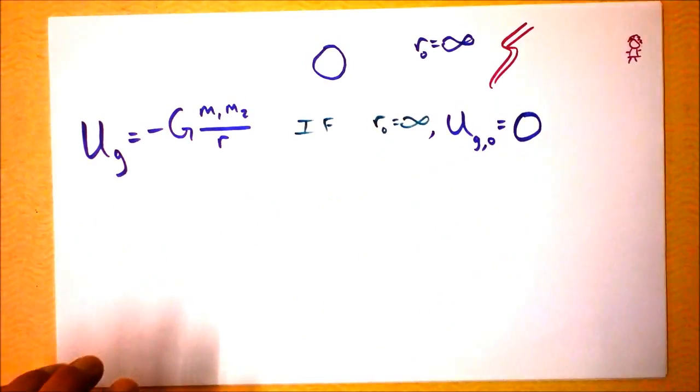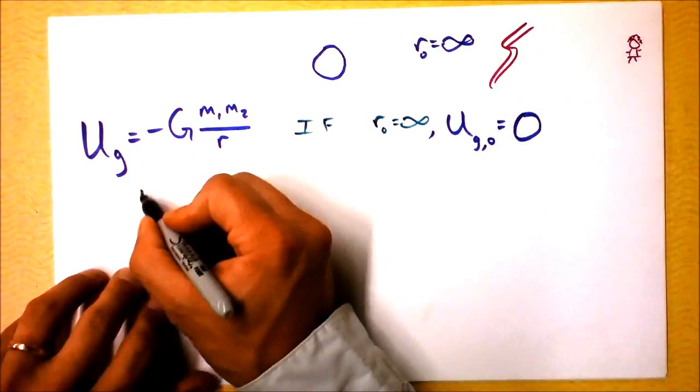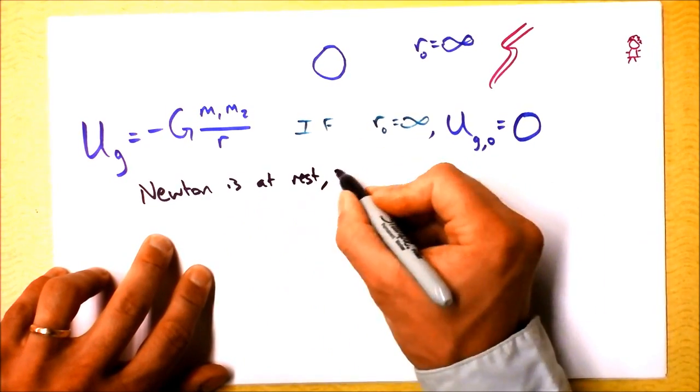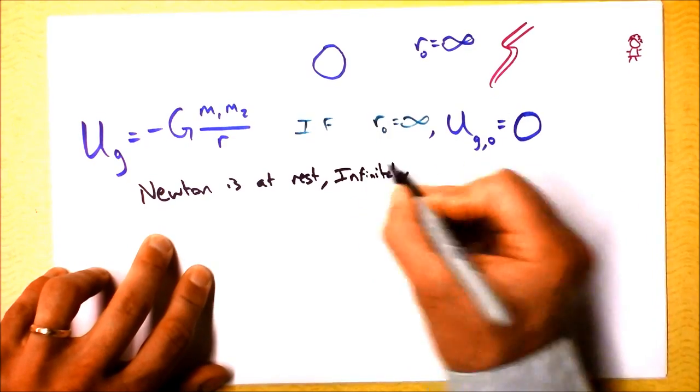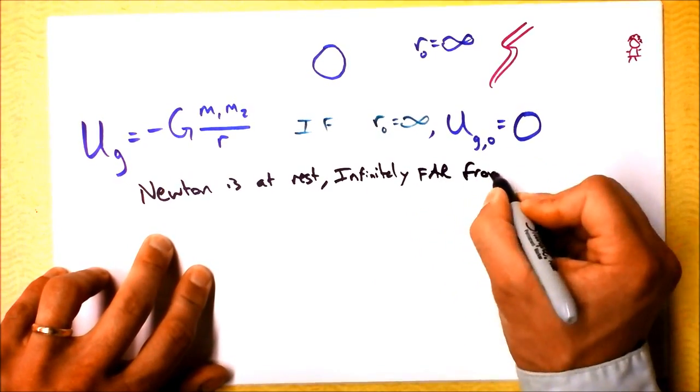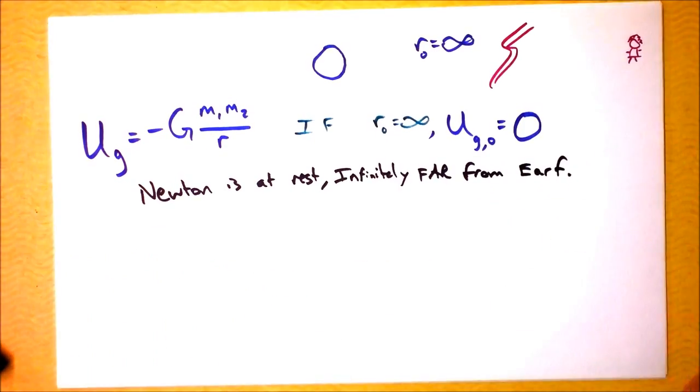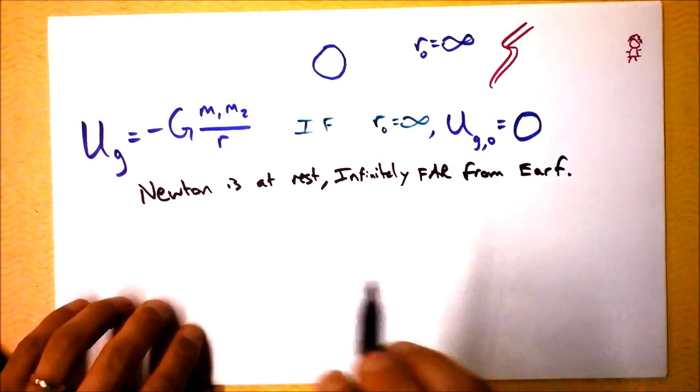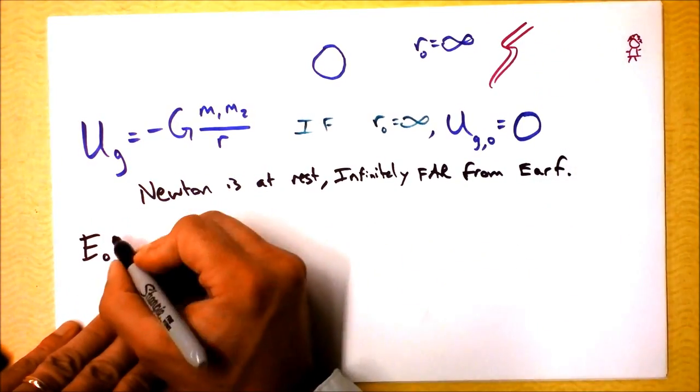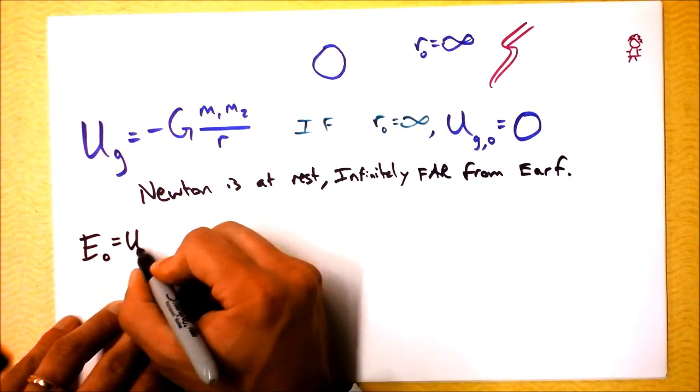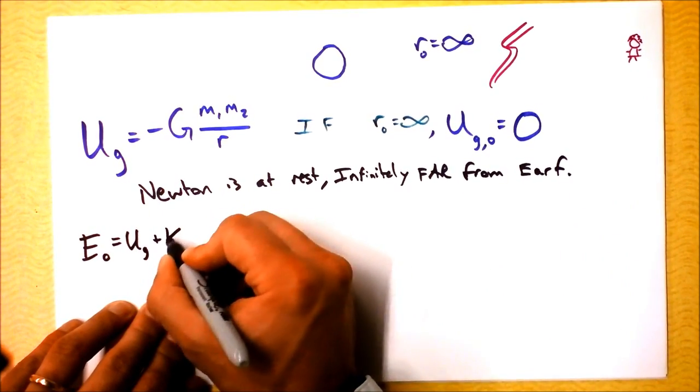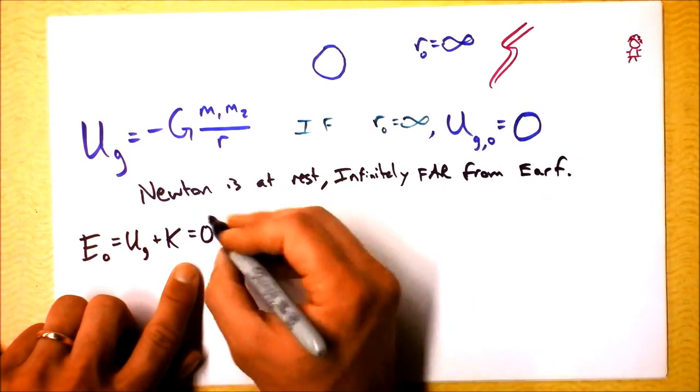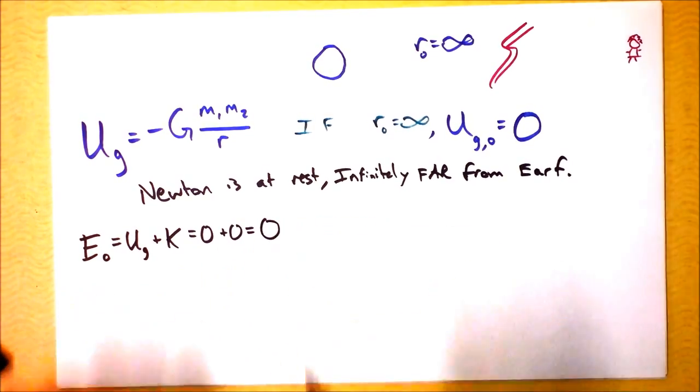Let's write out this problem. Newton is at rest infinitely far from Earth, and Newton is given a slight nudge. Let's examine Newton's total energy. Newton's total energy is his gravitational potential energy plus his kinetic energy. His gravitational potential energy is zero, and his kinetic energy is zero, so Newton has no energy to start out.